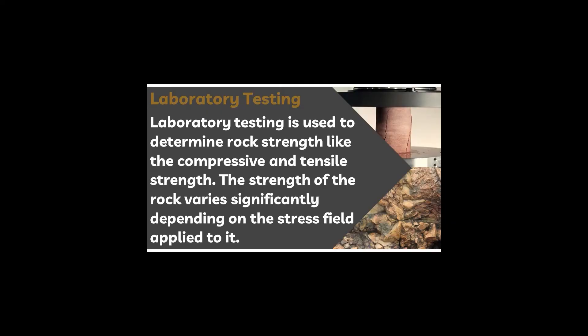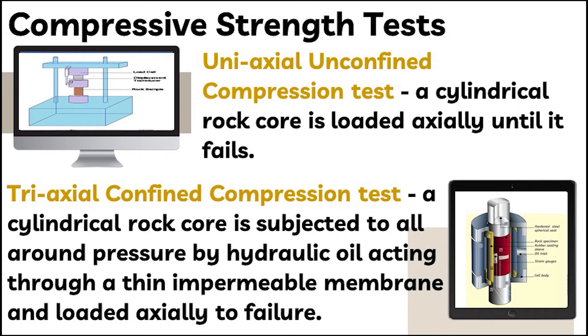Laboratory testing is used to determine rock strength, including compressive and tensile strength. The strength of the rock bar is significantly dependent on the stress field applied to it. To determine compressive strength, two tests can be used: (1) uniaxial unconfined compression tests, in which a cylindrical rock core is loaded axially until it fails; and (2) triaxial confined compression tests, in which a cylindrical rock core is subjected to all-around pressure by hydraulic oil acting through a thin impermeable membrane and loaded axially to failure.